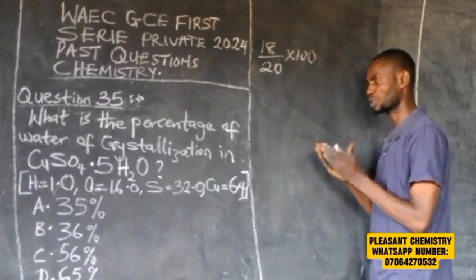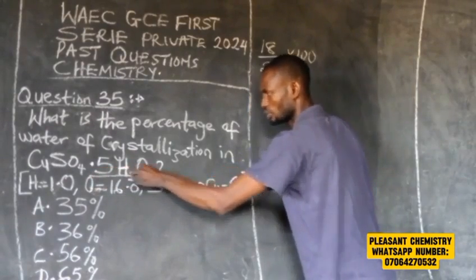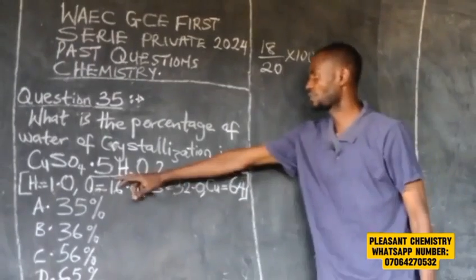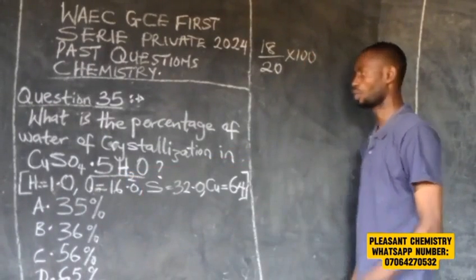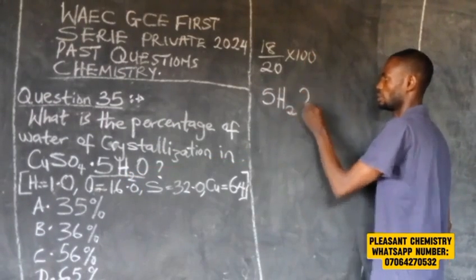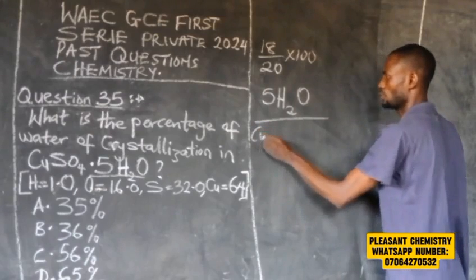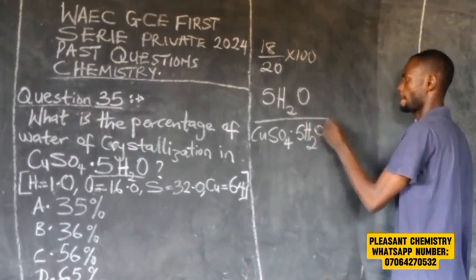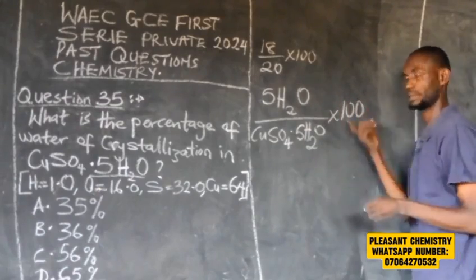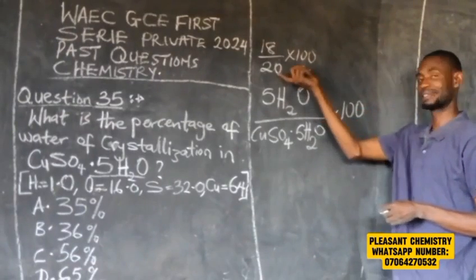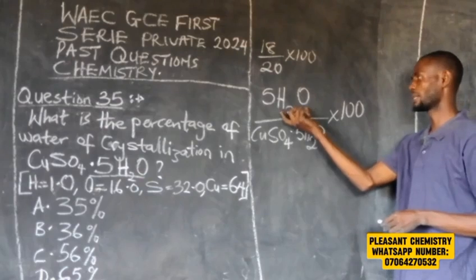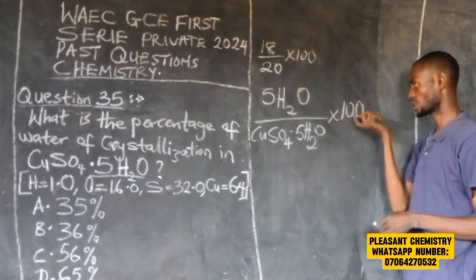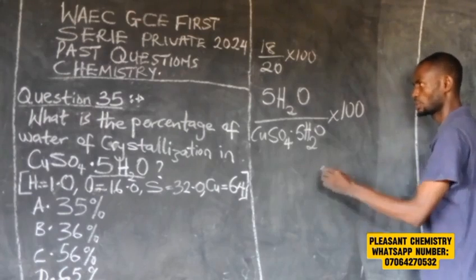The water of crystallization is the 5H₂O part in CuSO₄·5H₂O. So the formula is: 5H₂O divided by the total formula of CuSO₄·5H₂O, multiplied by 100. We will calculate the molar mass of water multiplied by 5, divided by the molar mass of the hydrated salt, then multiply by 100.